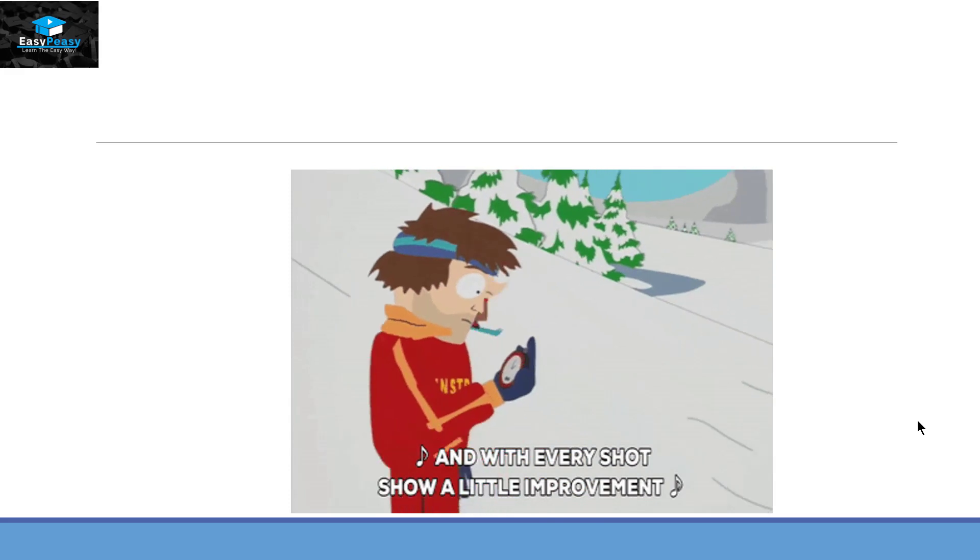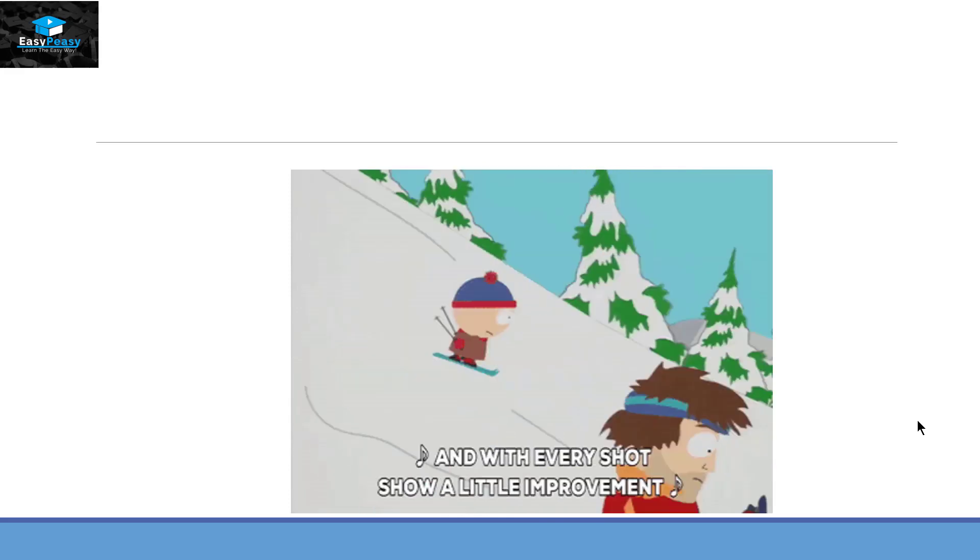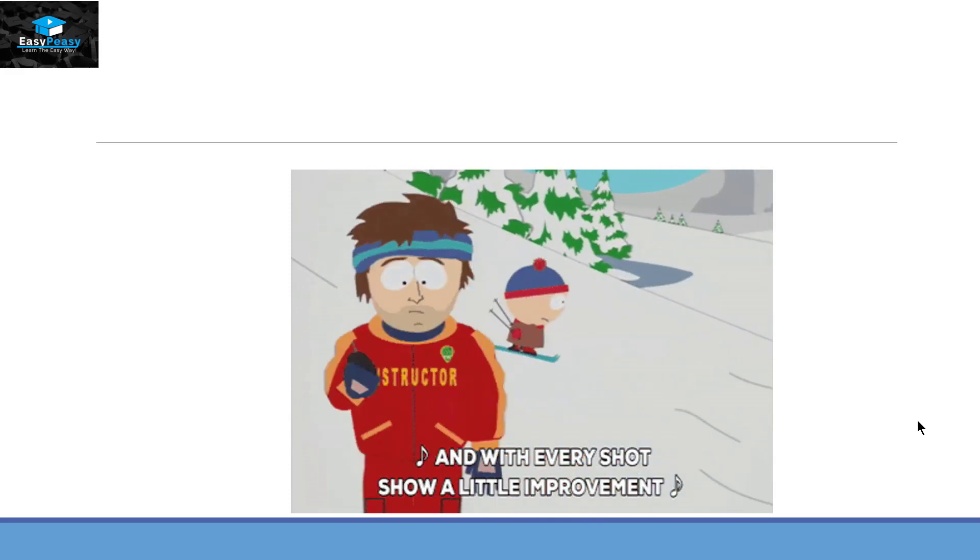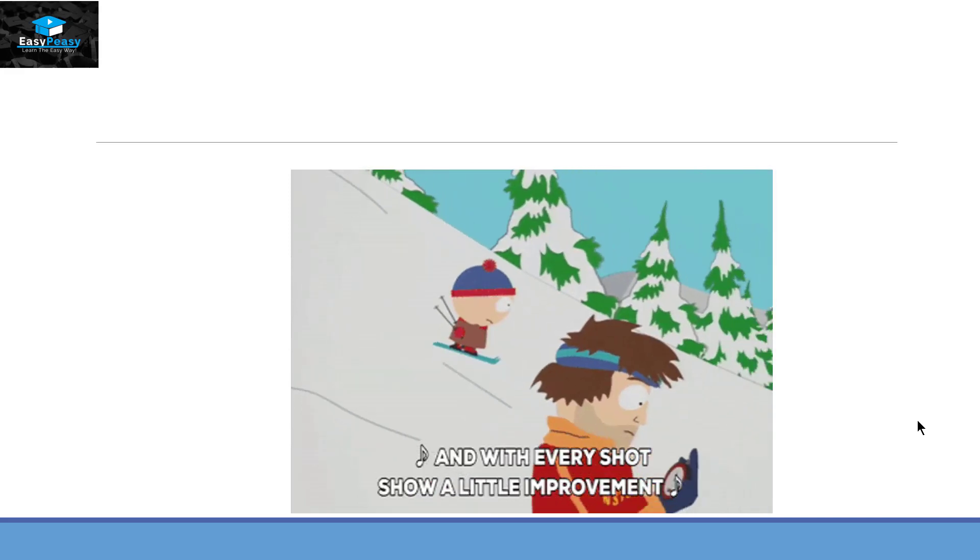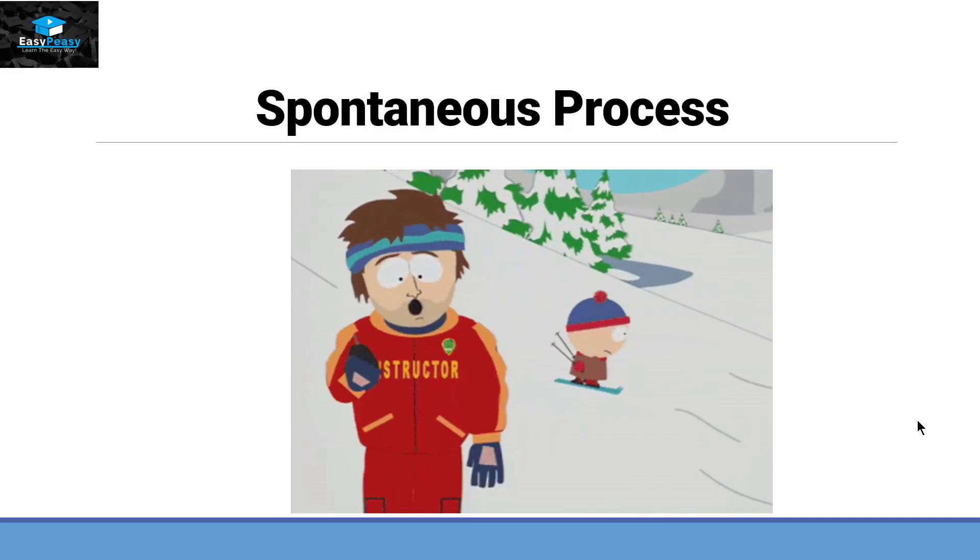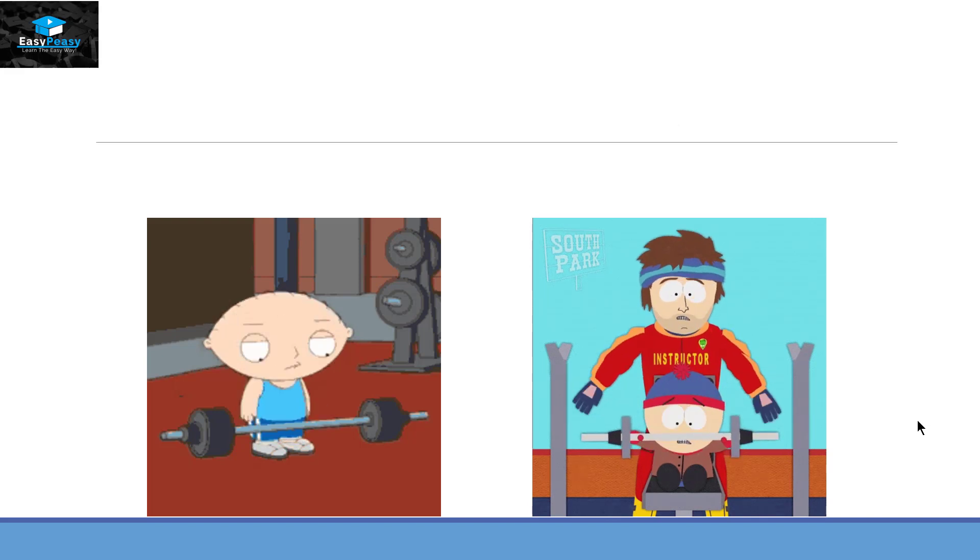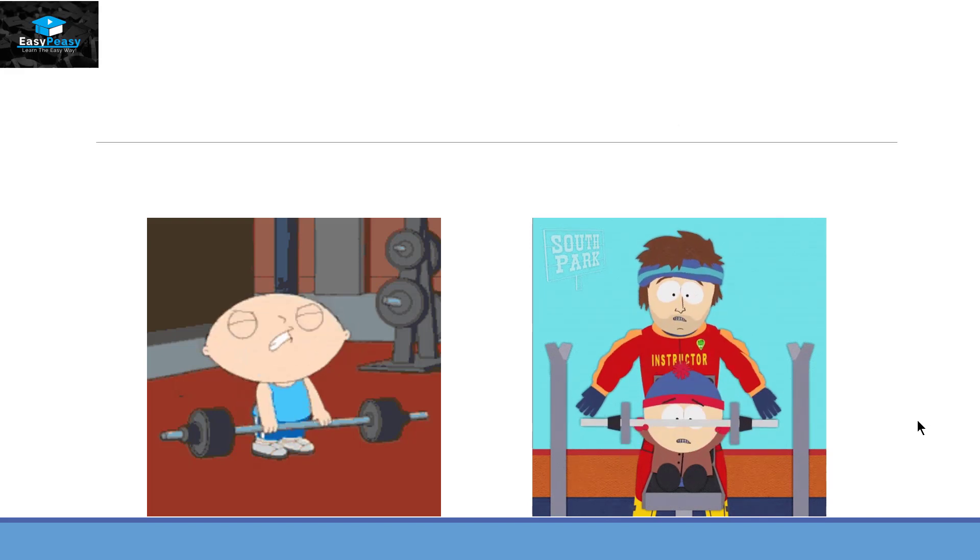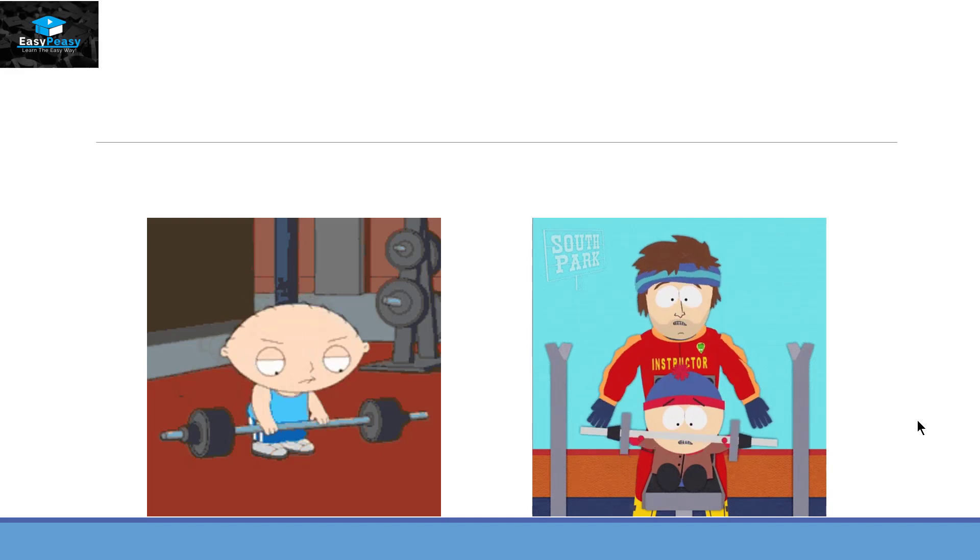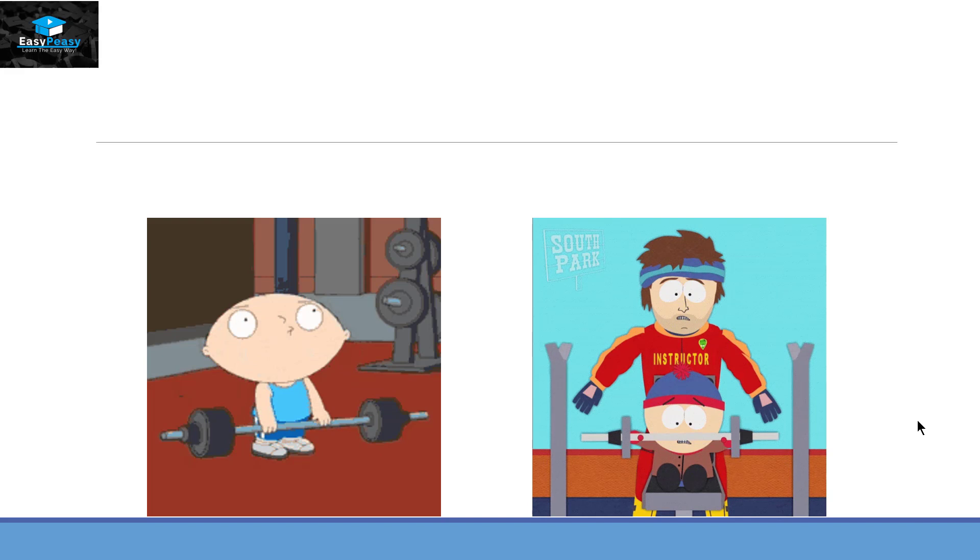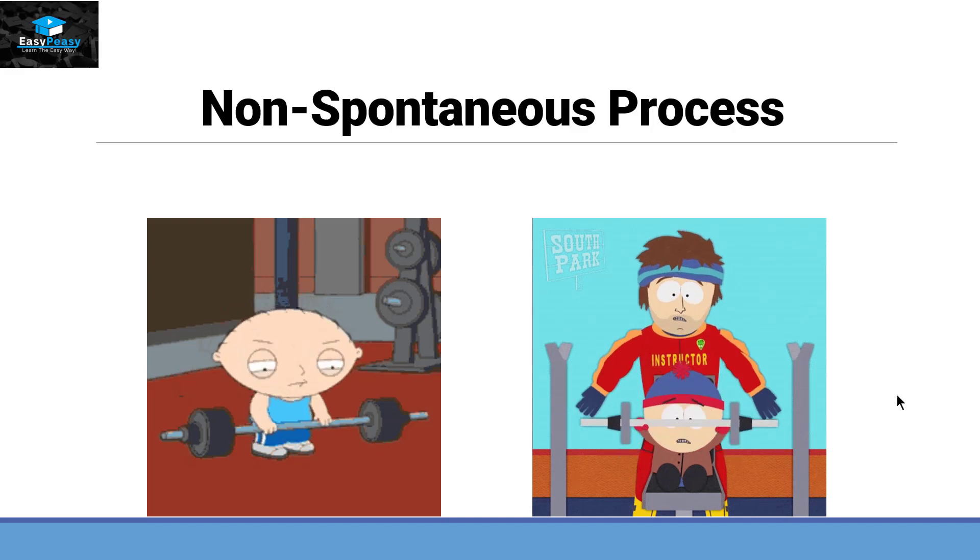For example, if a person is moving down a hill, it will need less amount of energy. This type of process is called a spontaneous process. And if a person is lifting weight, it cannot do it without the help of an instructor. Now it is taking energy from an external source, so this type of process is called a non-spontaneous process.